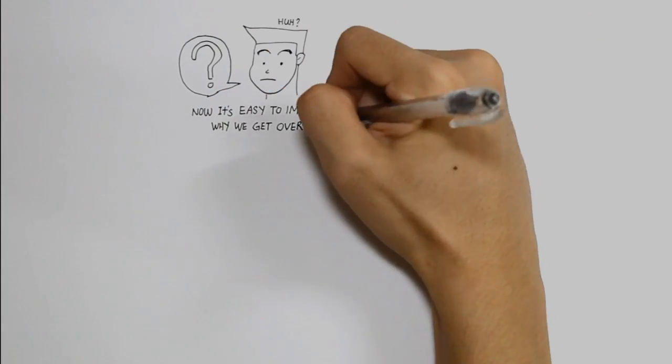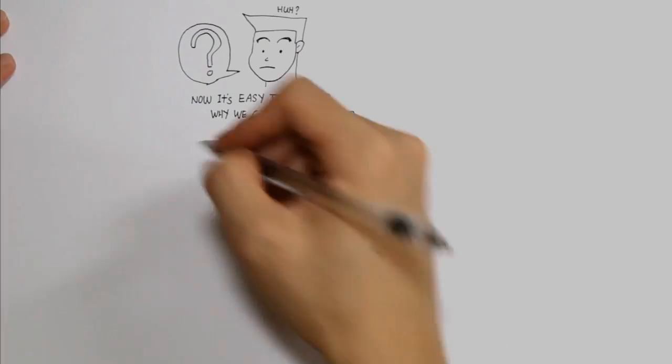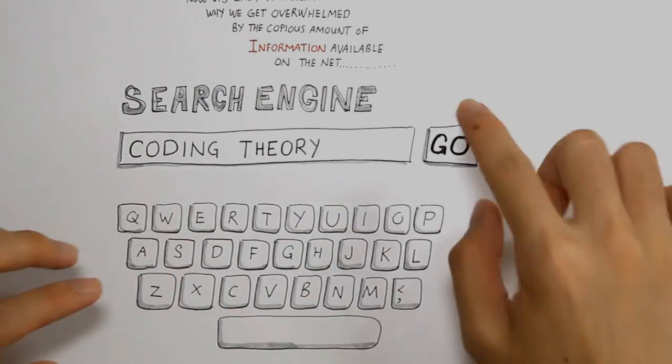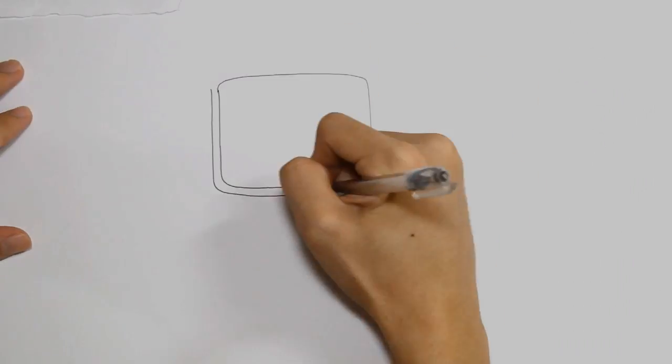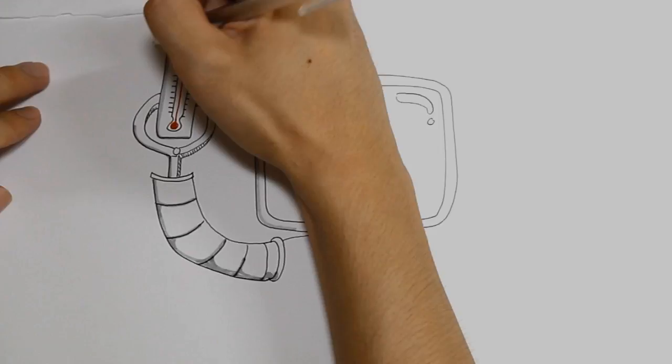Now, it's easy to imagine why we get overwhelmed by the copious amount of information available on the net. Sadly, the accuracy of our search results depend pretty much on what we type in the text box. And we get tons of hits, don't we?